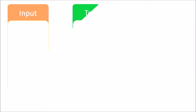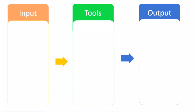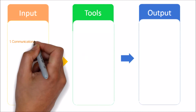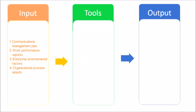Let's see the inputs, tools and techniques, and output of the Manage Communications Process. The first input is the Communications Management Plan, which describes how project communications will be planned, structured, monitored, and controlled.